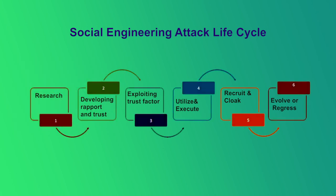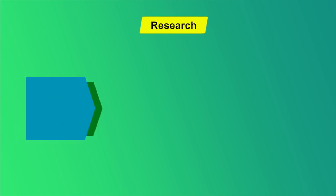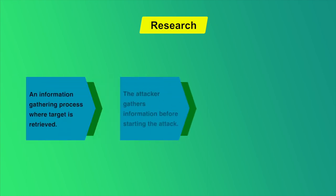The six phases are: research, developing rapport and trust, exploiting trust, utilizing information, cloaking activities, and evolve or regress. The first step is research — an information gathering process where information about the target is retrieved. The attacker gathers as much information as possible about the target before starting the attack.